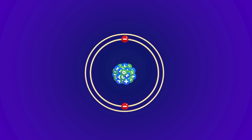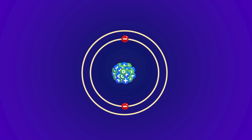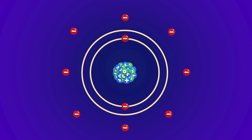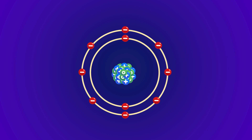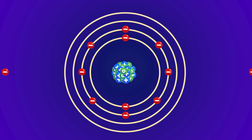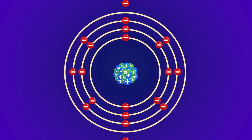At the next energy level, the second shell can bear a maximum of eight electrons. The third and fourth shells can hold eight and two electrons respectively.